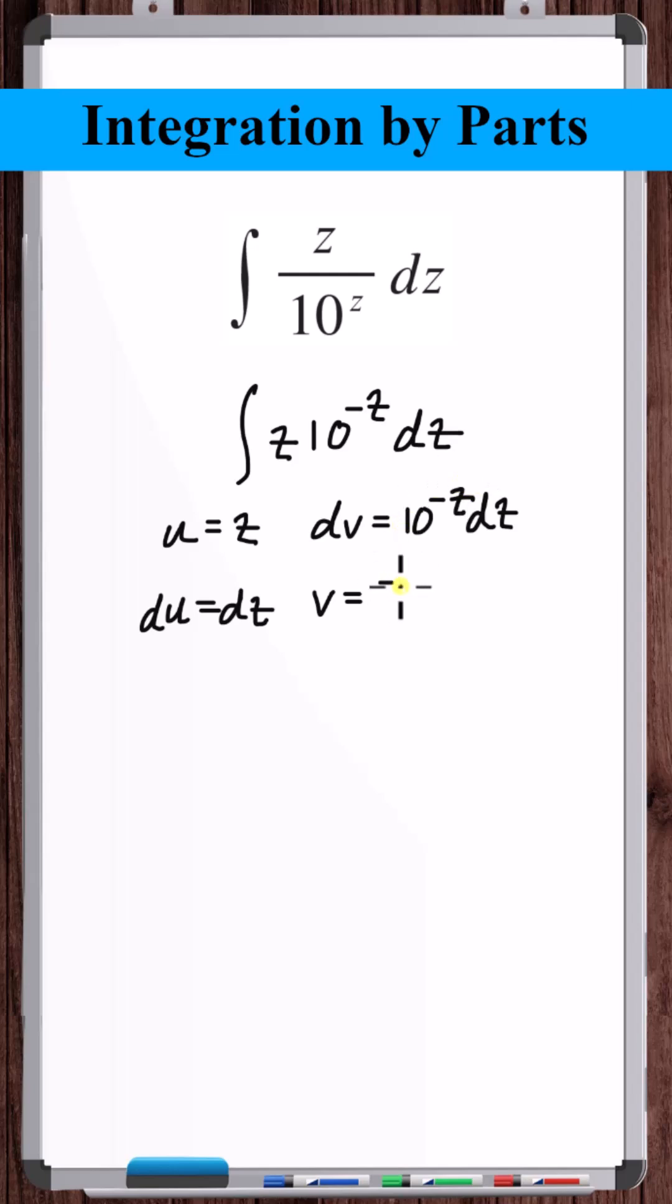Therefore, the integral of 10 to the minus z is minus 10 to the minus z divided by natural log of 10, right? If you take this derivative, you get 10 to the minus z.